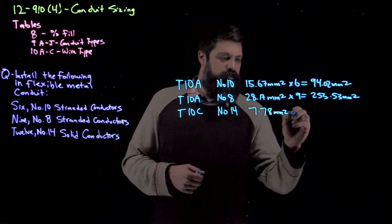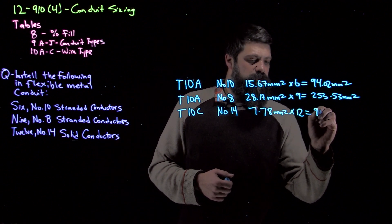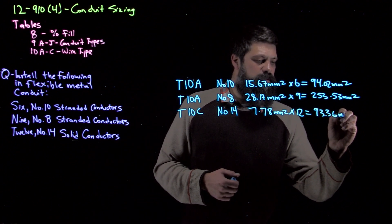And this time we have 12 of those. So we multiply that through, we will get 93.36 mm².